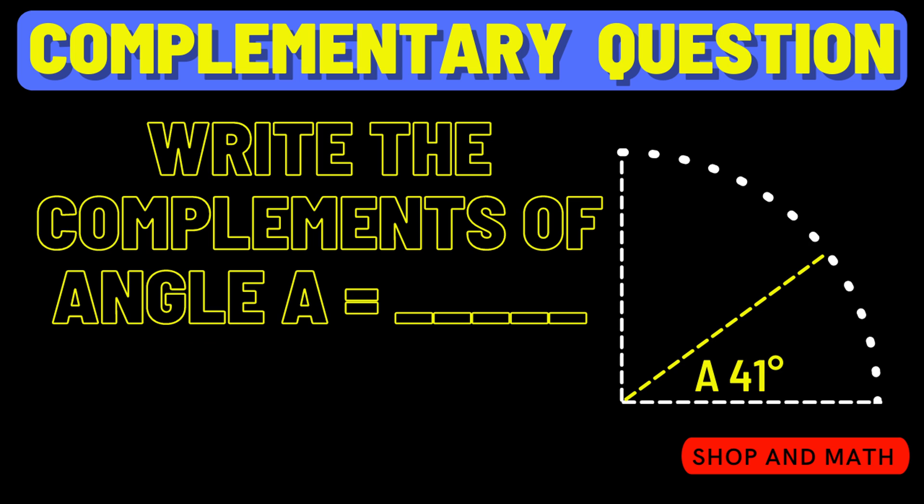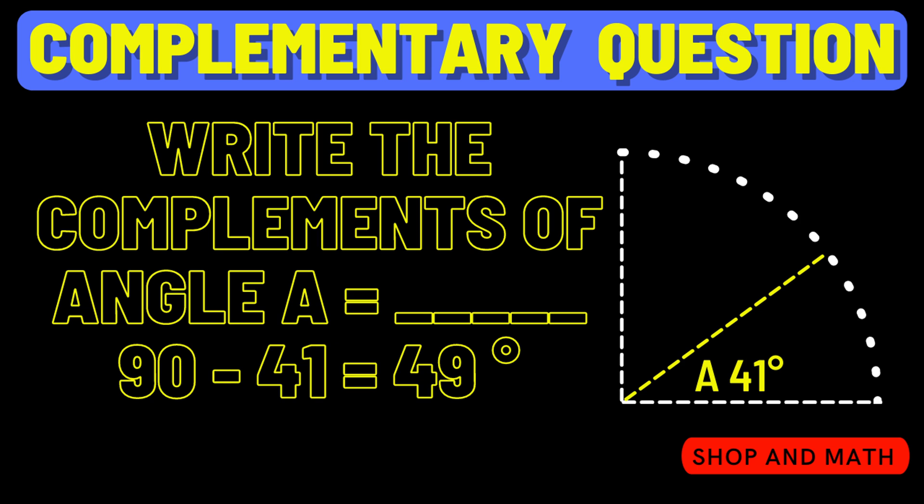An example of a complementary question that you might get on a test: you have one angle that's 41 degrees and they want to know the complementary of the 41 degree angle. So it'd be 90 minus 41 equals 49 degrees — therefore the complementary angle is 49 degrees.